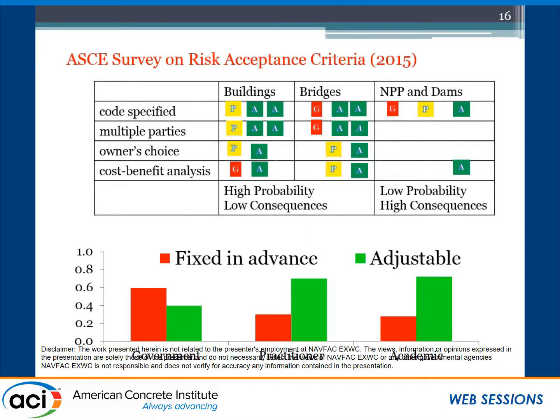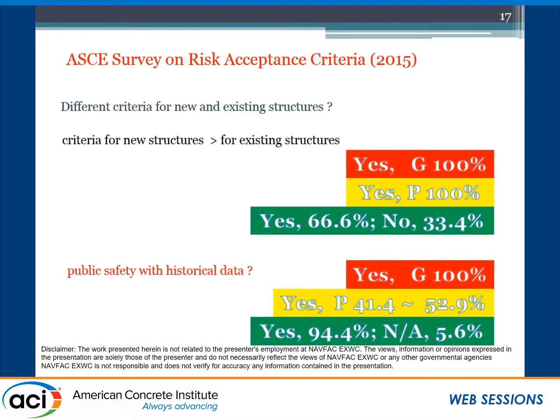For bridges, respondents lean toward code specification. For nuclear power, people's opinion is the dominant factor. One key question was: should we fix the criteria first and then do the risk analysis, or should it be flexible — do the risk analysis first and adjust the criteria later? About 60% of government engineers said fix it first, while 40% said no. For consulting engineers and academic professors, about 60% said we should be able to adjust it. This is a very important distinction.